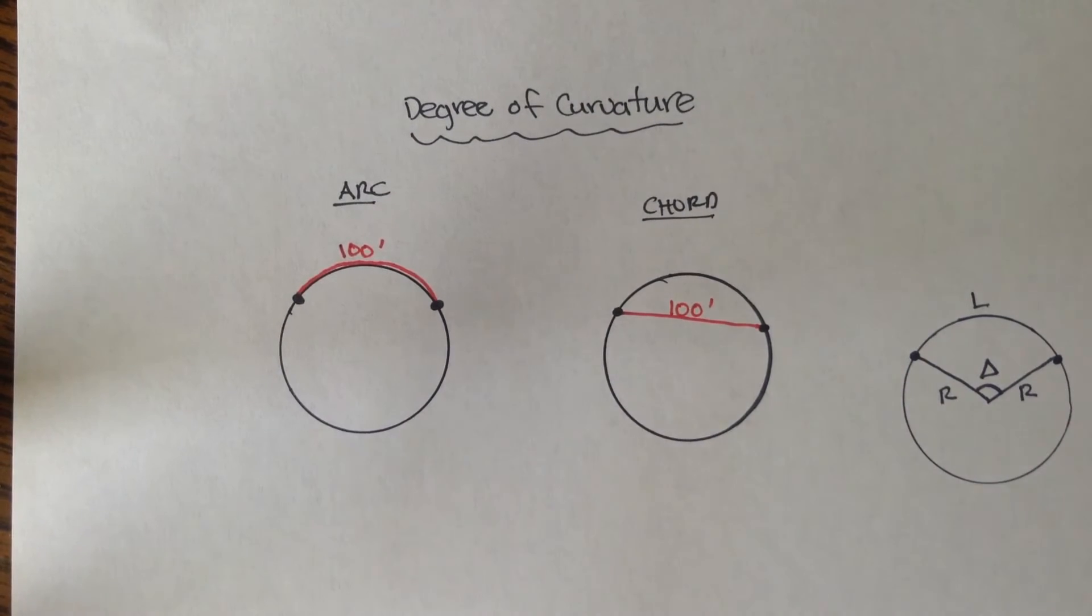Arcs are generally used on freeways, highways. And if a problem asks you to figure out what the degree of curvature is for this curve, and they don't tell you if it's an arc or chord, you just assume that it's arc. Arc's always the default. And chords are usually used for train tracks, railways, that sort of stuff.